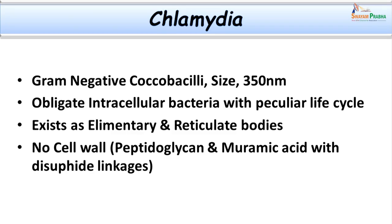Let us learn a little more about Chlamydia — their morphology and life cycle. Chlamydia are gram-negative coccobacilli. Their size is almost equal to the size of larger viruses, around 0.3 micrometers or 300 nanometers. They are obligate intracellular bacteria and cannot produce their own ATP, so they depend on the host cell's ATP. Hence they are sometimes described as energy parasites. They have a peculiar life cycle not usually seen in bacteria, and they differ from other bacteria in some characters.